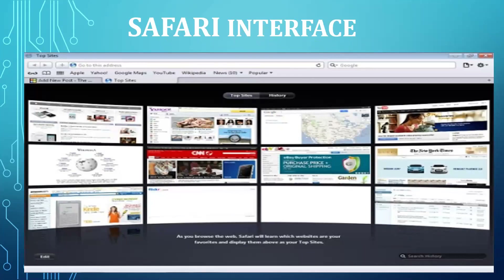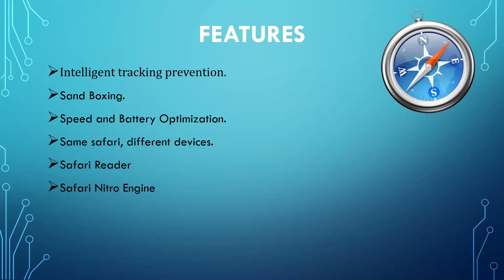The first feature is Intelligent Tracking Prevention. Using this, the latest version of Safari stops embedded trackers from associating users with specific web pages. This is the most important and most utilized feature of Safari by Apple.